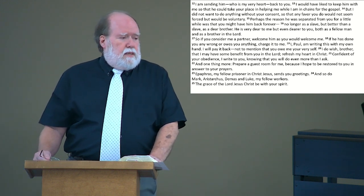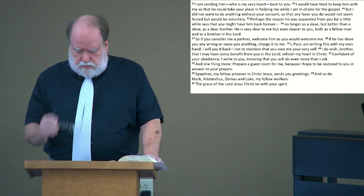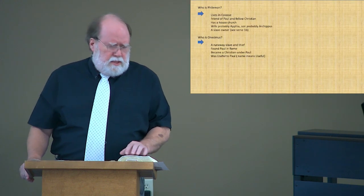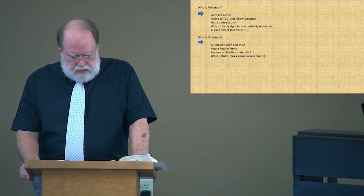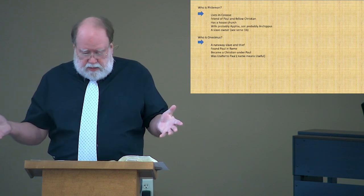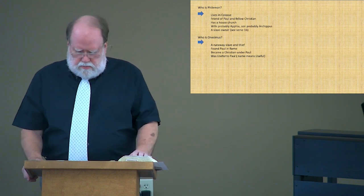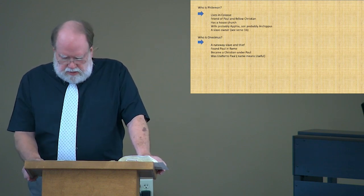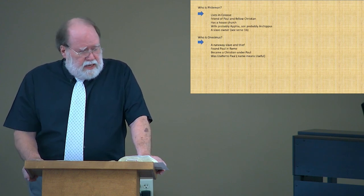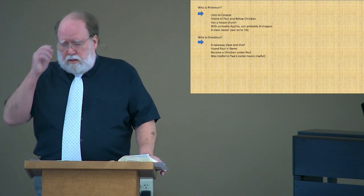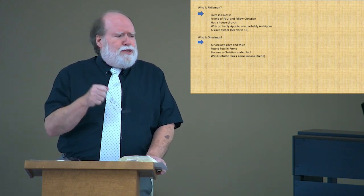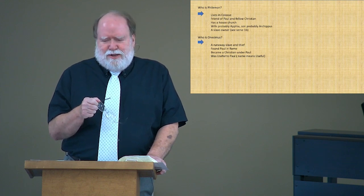Who is Onesimus, who is the central character of this book? He is a runaway slave and a thief. He ran away from Philemon. He stole from Philemon when he left. He left Philemon's house and he found Paul in Rome. And there, under his discipleship, he became a Christian. And we will find out when we read the book, Onesimus was very useful to Paul. Matter of fact, that's what his name means, is useful, which Paul is going to use in the book a couple of times to talk about him.